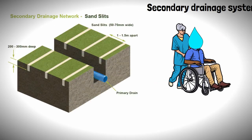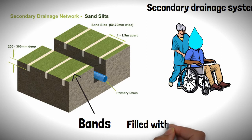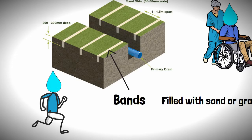The system consists of trenches running perpendicular to the primary drains, also known as bands. These bands are either filled with sand or gravel to help move the water to the primary drains quicker.